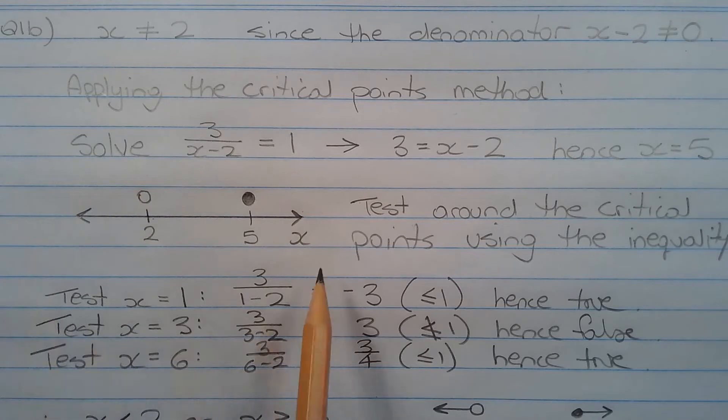So the two critical points are x cannot equal 2, shown as an open circle on this number line, and x equals 5, shown as a closed circle. The next step is to test around the critical points using the inequality to determine the direction of the solution.